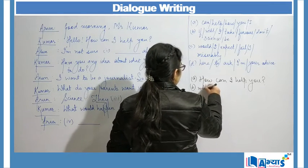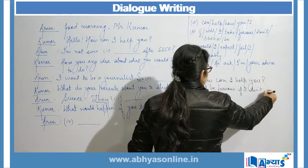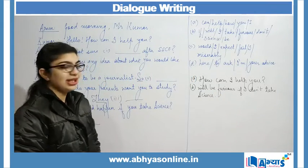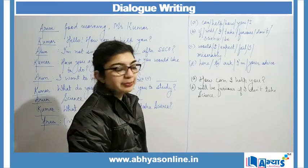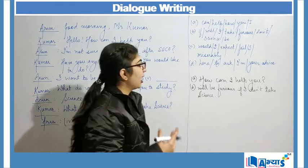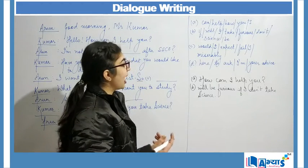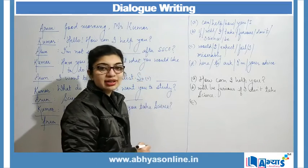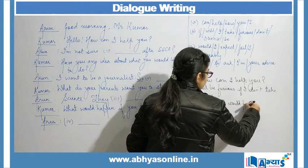So sentence B, correctly formed, is: 'They will be furious if I don't take science.' Next, sentence C says 'would I expect fail I miserably.' Through a process of trial, if I say 'I expect I would fail miserably' — this is the correct formation. So the correctly formed sentence C is: 'I expect I would fail miserably.'